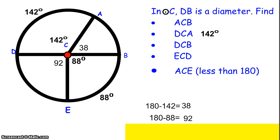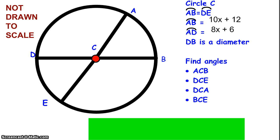Pretty basic question. The next problem that we have includes equations as a part of the central angles. In this problem, it tells me that the two arcs here, DE and AB, are the same. I'm highlighting them just so that I recognize that. In the problem, they tell us that arc AB is 10X plus 12, and that arc AD is 8X plus 6, and that DB is my diameter.